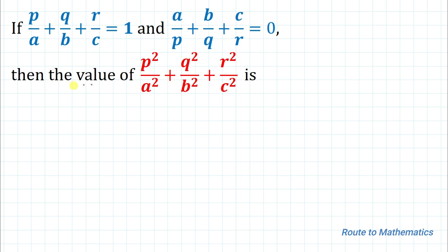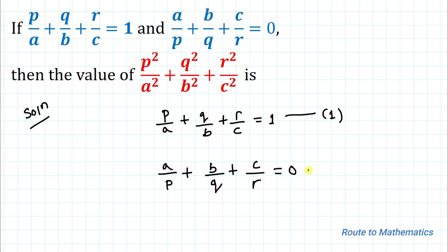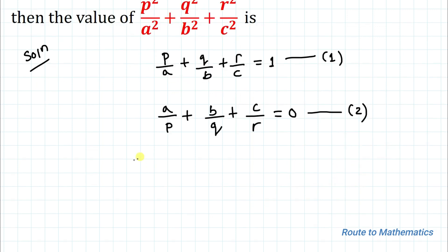So here we have two equations, and from those we are asked to find the value of the given expression. Without any delay, let's start the solution. Our first equation is p/a + q/b + r/c = 1, and our second equation is a/p + b/q + c/r = 0.